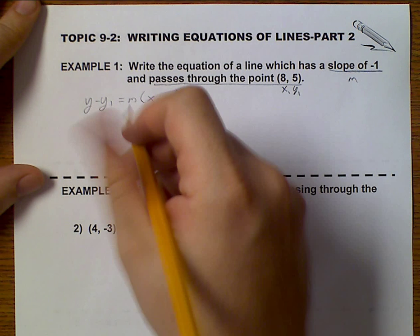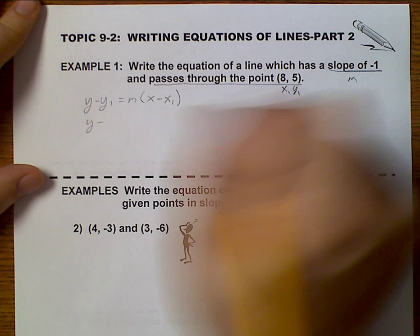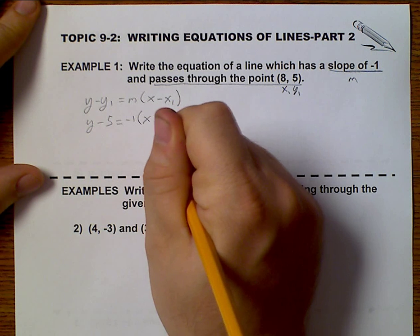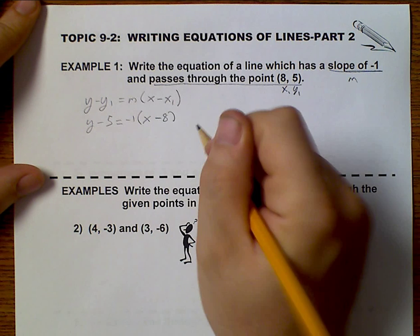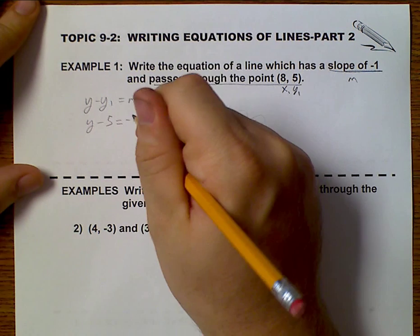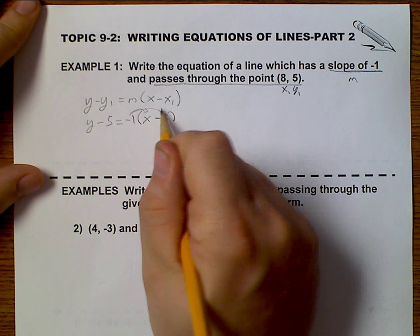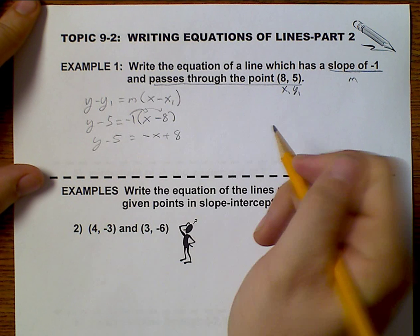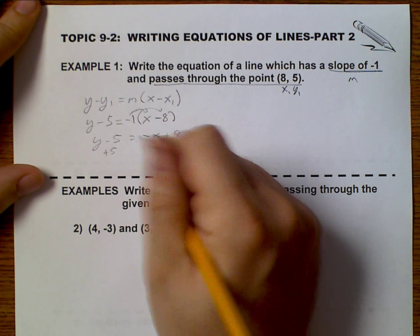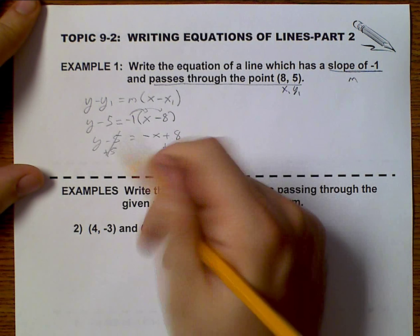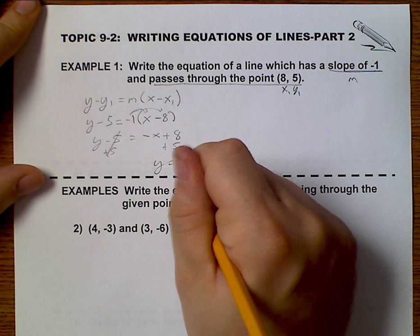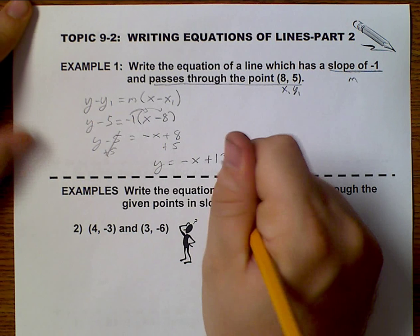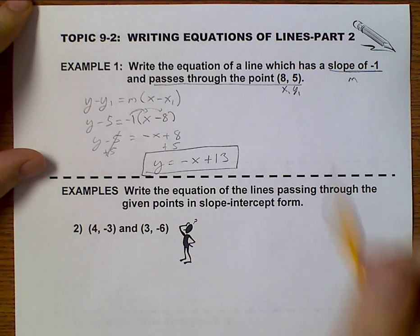So I rewrite this as y minus 5 equals negative 1 times x minus 8. I'll go ahead and start solving this. I distribute the negative 1, y minus 5 equals negative x plus 8. And then we add the 5 to get rid of it, and we get that y equals negative x plus 13. And that's the equation of our line.